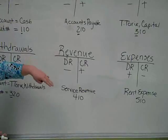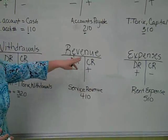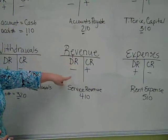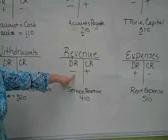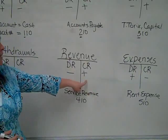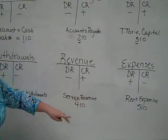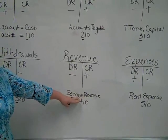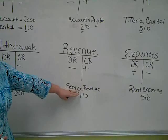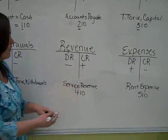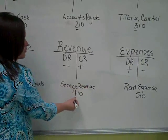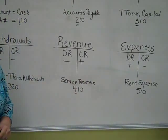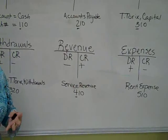Revenue is our next type of account: debit on the left, credit on the right. The rules for revenue are debits are decreases and credits are increases. An example account number would be 410, because revenue accounts all start with a four.